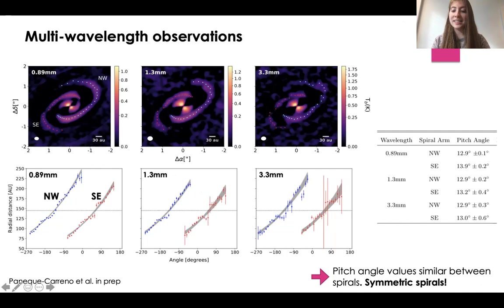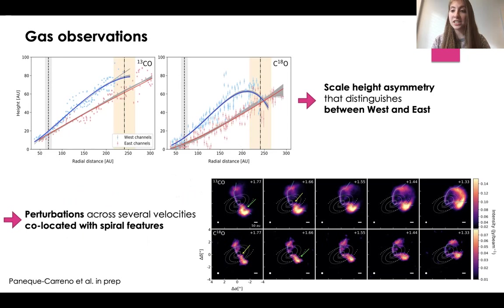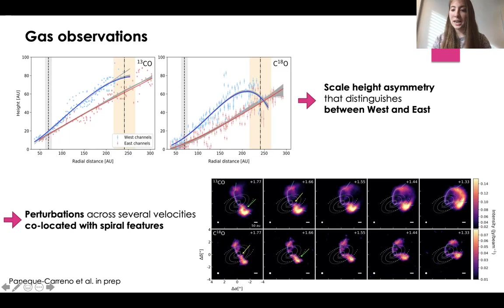Additionally, we have gas observations. We trace the emitting surface for the 13CO and the C18O using a method developed by Christophe Pinte in 2018. When we do this, we find that there is a scale height asymmetry that distinguishes between west and east, so this disc appears to be highly perturbed. Additionally, across several channel maps, we see many perturbations or kinks, which seem to be co-located with the spiral features.